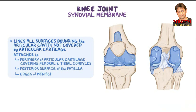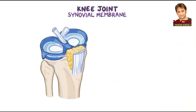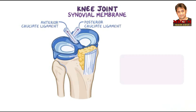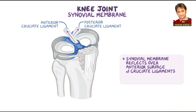The synovial membrane does not line the fibrous joint capsule centrally in the posterior knee. From this view, we can see the anterior and posterior cruciate ligaments. The synovial membrane reflects anteriorly over the anterior surfaces of the cruciate ligaments into the intercondylar region instead of going behind them, meaning the cruciate ligaments actually lie posterior and outside of the synovial-lined articular cavity, so they are considered extra-articular.